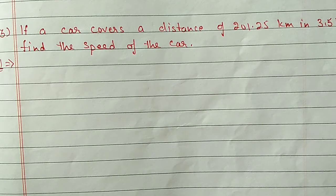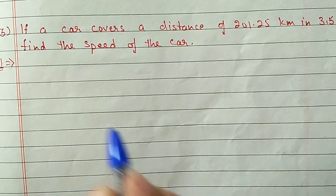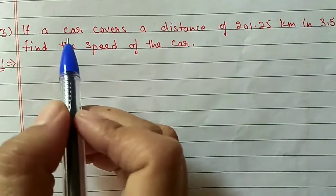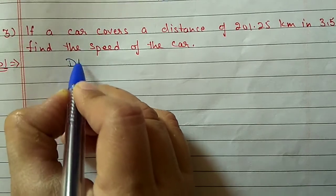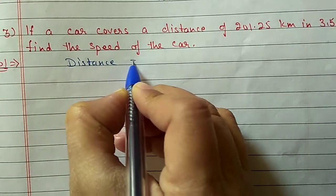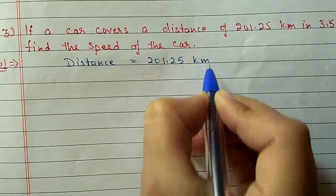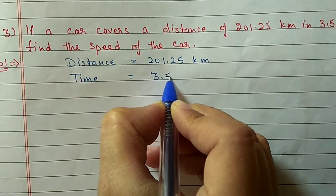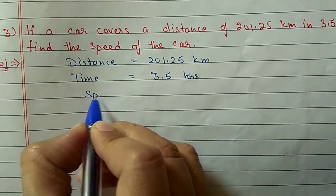Question 3: A car covers a distance of 201.25 km in 3.5 hours. Find the speed of the car. Distance is in km and time is in hours, so no need to change anything. Distance is 201.25 km and time is 3.5 hours. Speed is equal to distance divided by time.